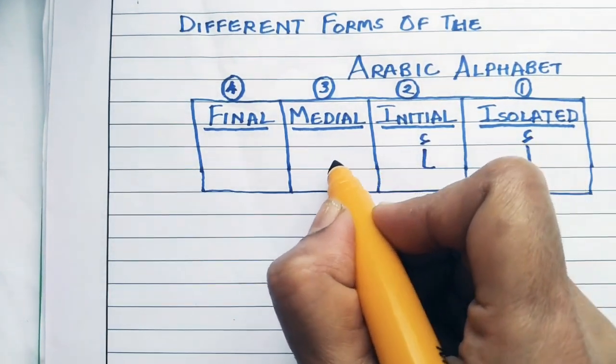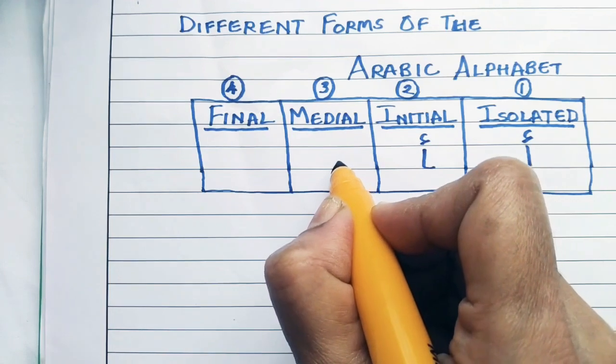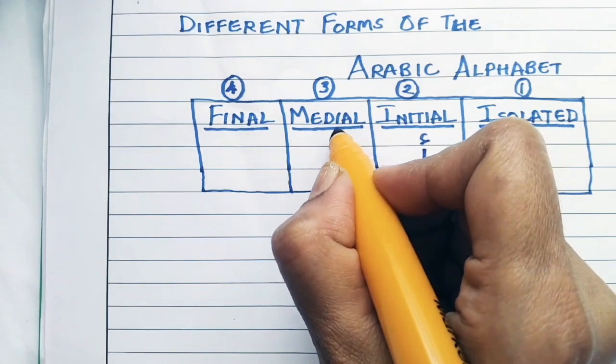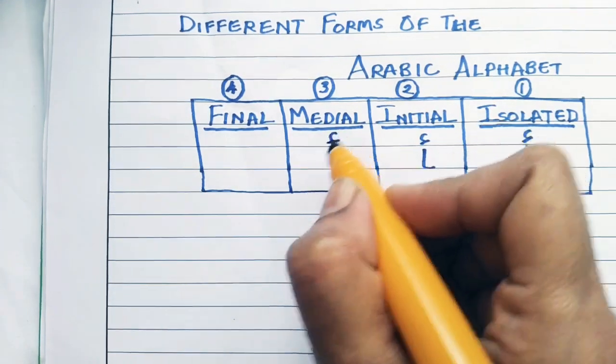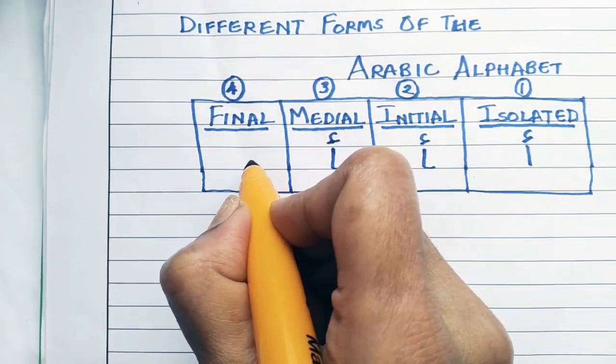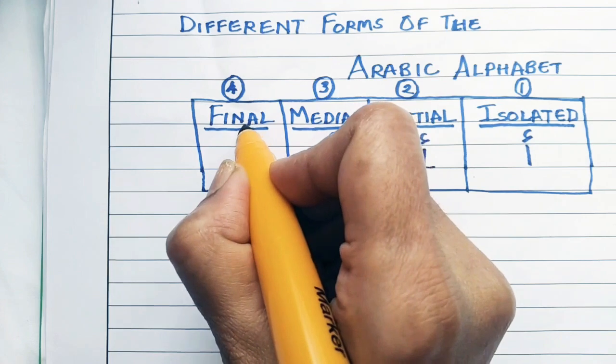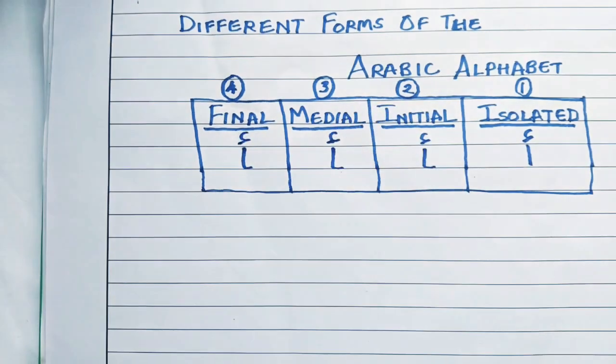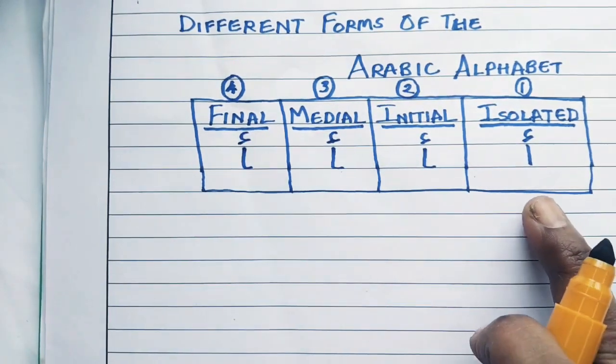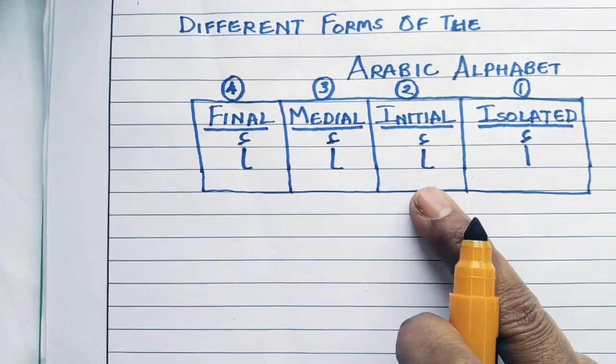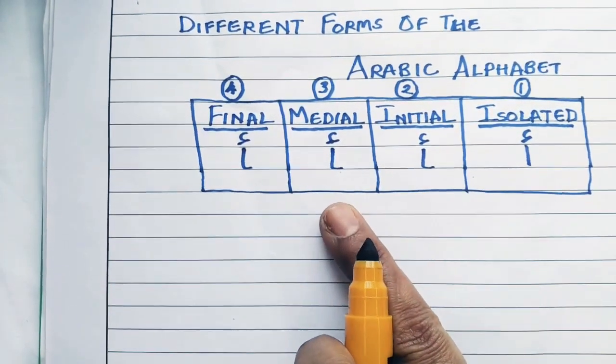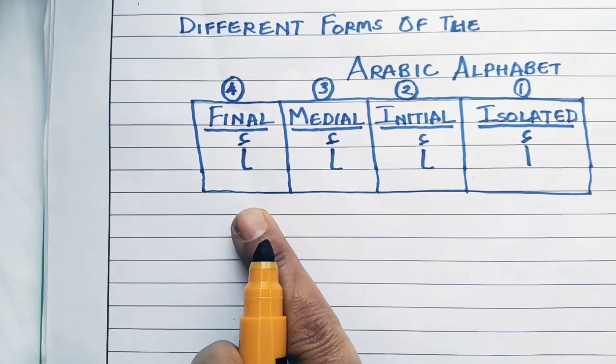In medial form it also appears in the same form, and in final it appears in the same form. So this is an isolated form, this is initial, this is medial, and this is final.